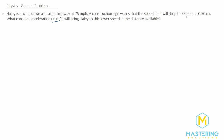Since they want the answer in meters per second squared, we have to convert both her speed and the speed limit into meters per second. We start with 75 miles divided by one hour. We want miles to cancel, so we put miles in the denominator and meters on top. A very useful conversion factor to remember is that one mile equals 1609 meters.